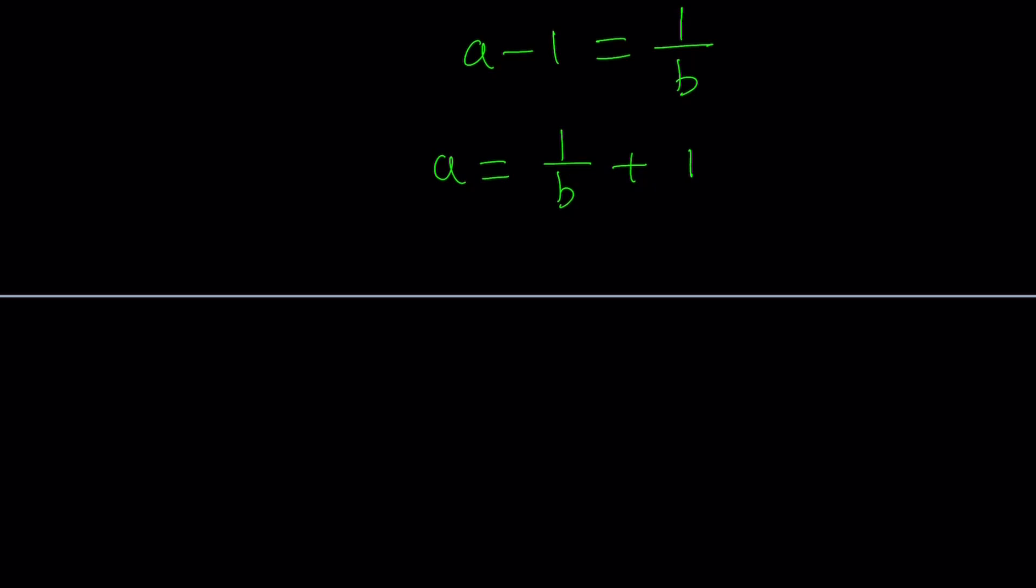So in this case, notice that a is an integer, so 1 over b plus 1 is an integer, which means 1 over b is an integer, which means b has to divide 1. But 1 is like, there aren't that many numbers that divide 1, right? How many numbers divide 1?